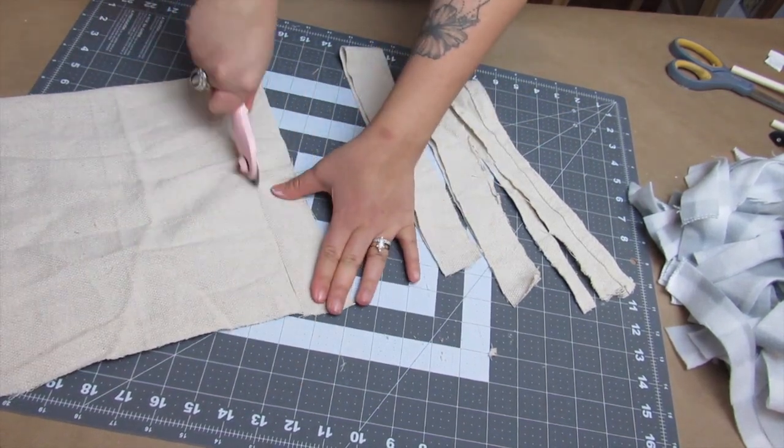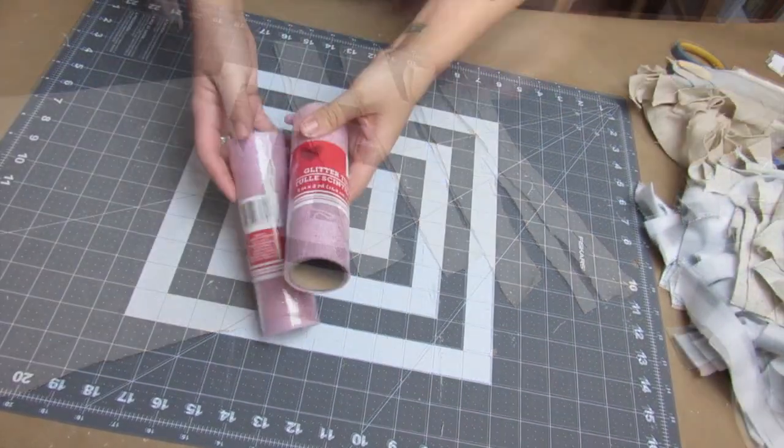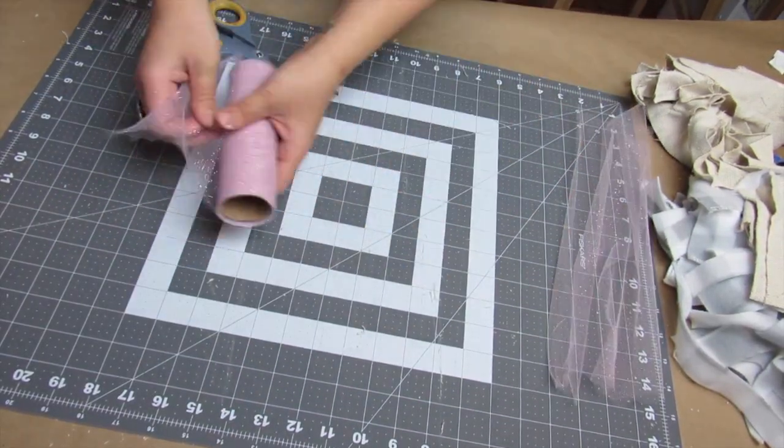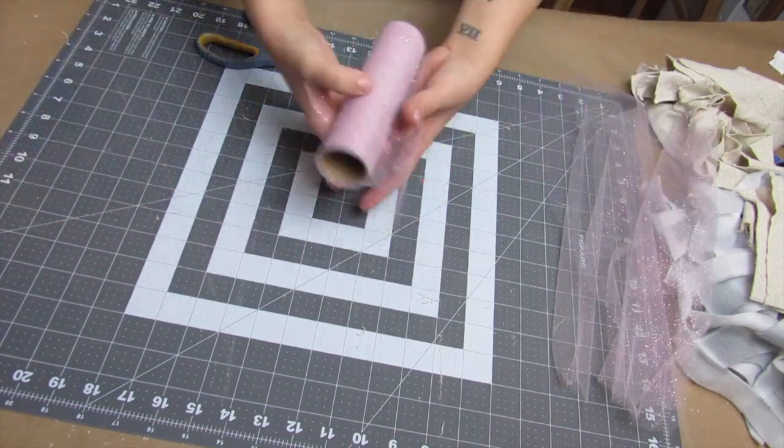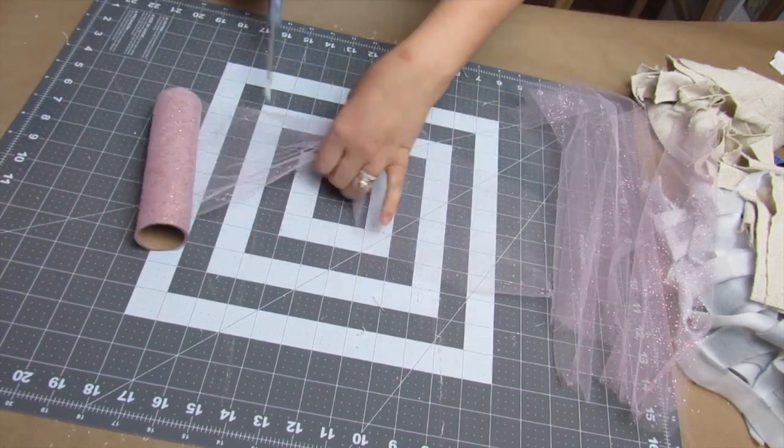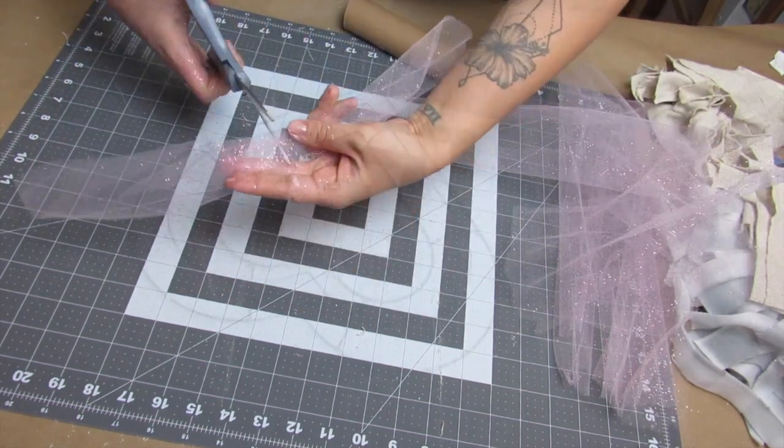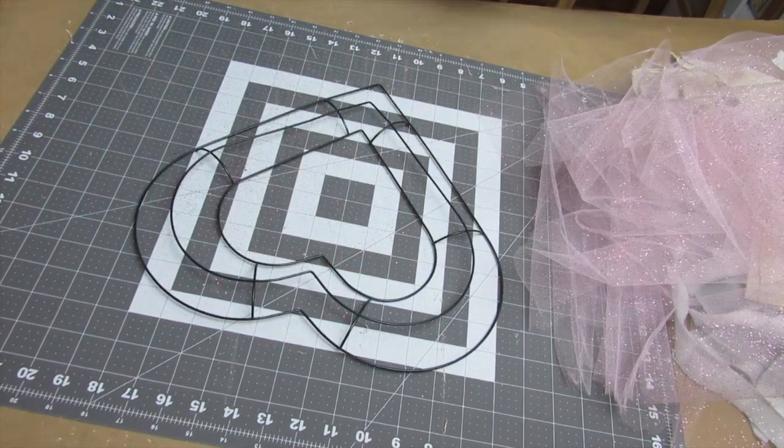When it came to the tulle, I just kind of eyeballed it, unraveled a little bit, and cut. You'll see it throughout making the wreath—I kind of trim and eyeball it. Rag wreaths don't need to be perfect, and that's one of my favorite things about making them.